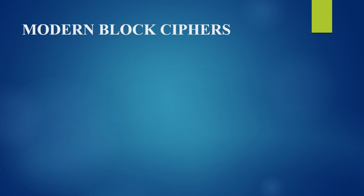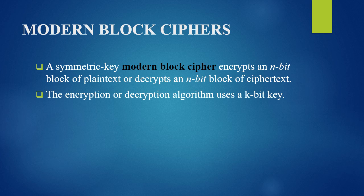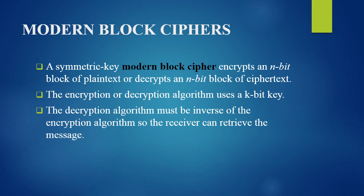Now we can easily understand the definition of modern block ciphers. A symmetric key modern block cipher encrypts an n-bit block of plaintext or decrypts an n-bit block of ciphertext. The encryption or decryption algorithm uses a k-bit key, which will be the same for both. The decryption algorithm must be the inverse of the encryption algorithm so the receiver can retrieve the original message.